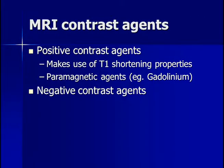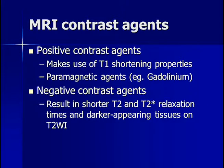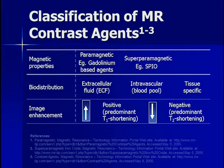MR contrast agents can be positive contrast agents, which appear bright on T1-weighted images, or negative contrast agents, which appear dark on T2-weighted images. The most typically used is gadolinium, a positive contrast agent. MR agents can be classified by their magnetic properties — typically paramagnetic substances such as gadolinium-based agents, or superparamagnetic structures such as superparamagnetic iron oxide (SPIO), which is a negative, predominantly T2-shortening agent. Biodistribution can be extracellular, intravascular (staying in the blood pool, ideal for MR angiograms), or tissue-specific.